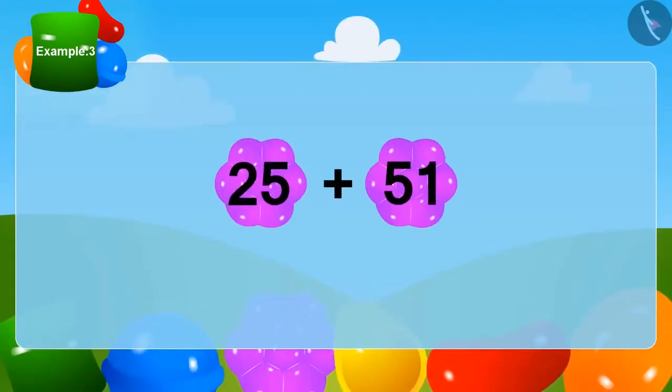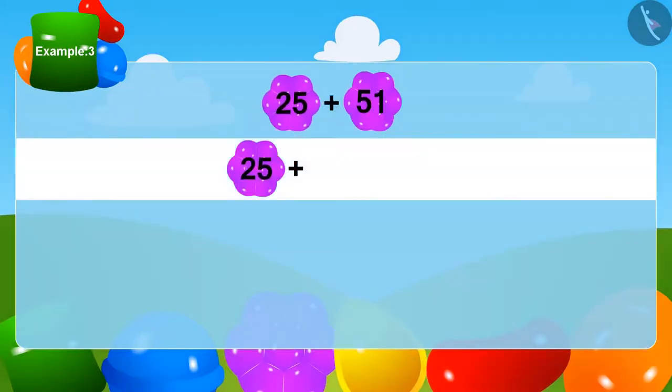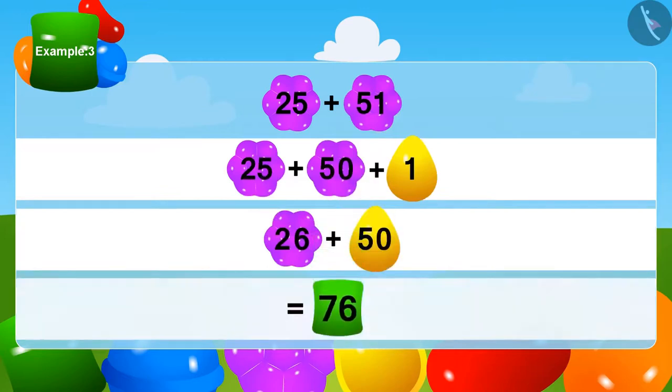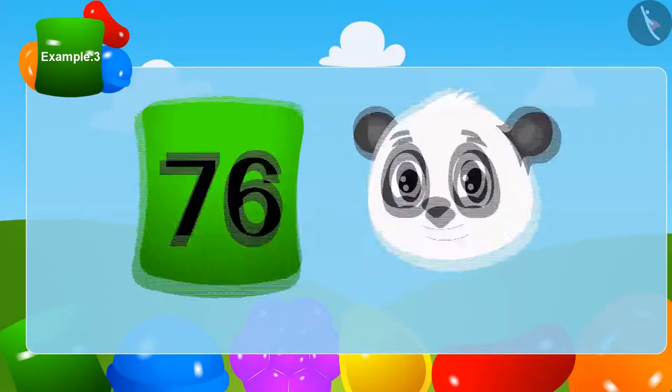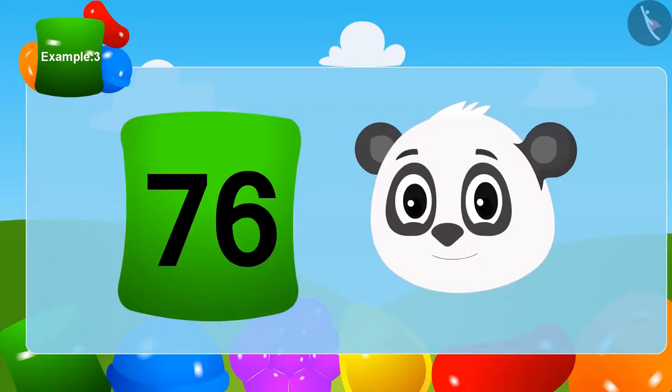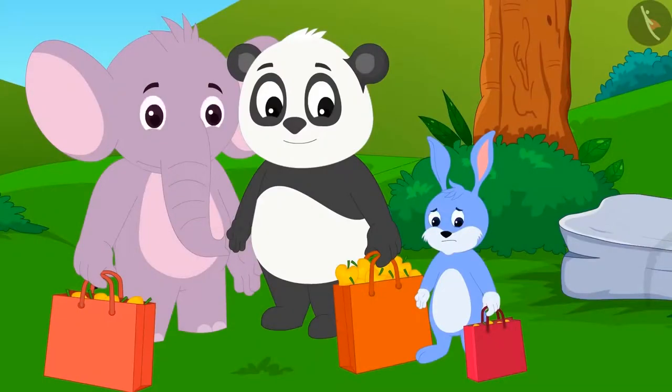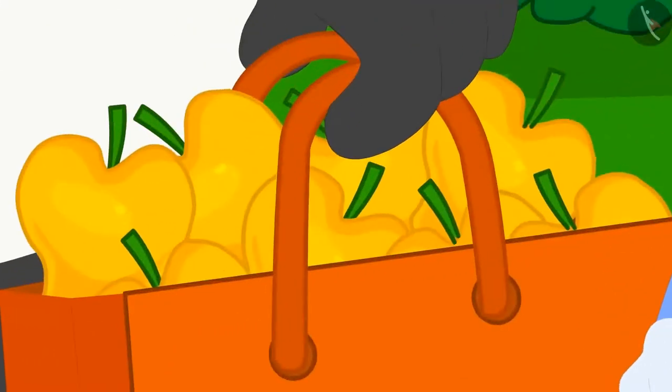Children, can you tell me how many mangoes Golu has? Yes, Golu received a total of 76 mangoes. Golu very patiently waited and decided to be the last to take the mangoes. Children, you must remember that good things come to those who have patience.